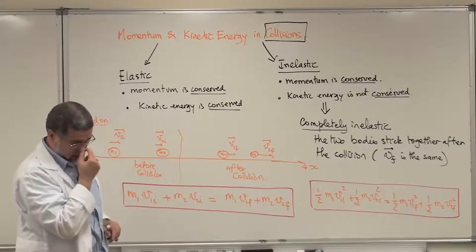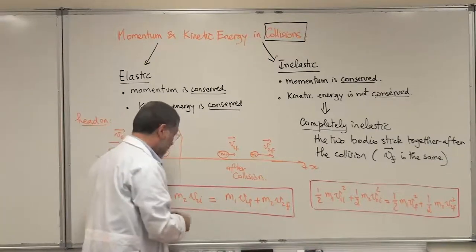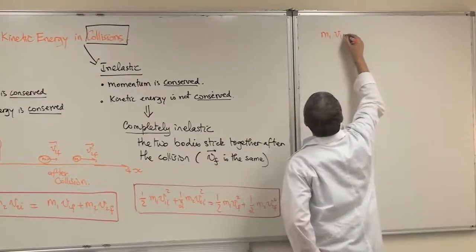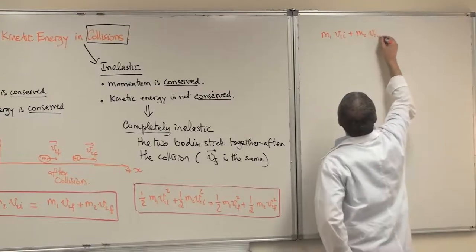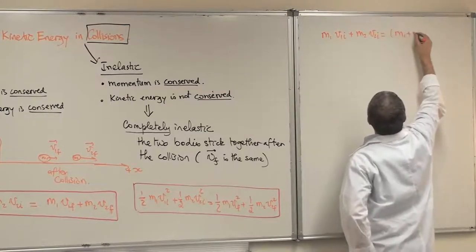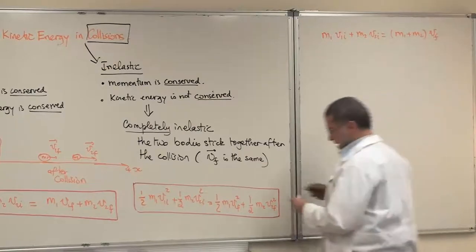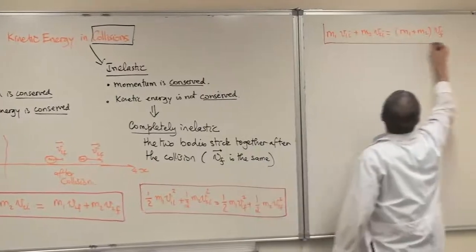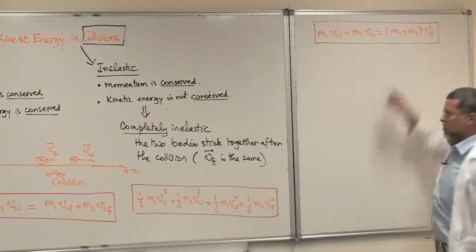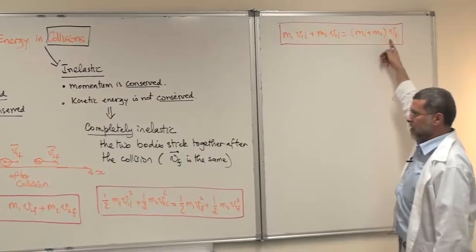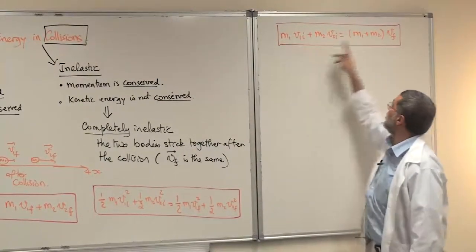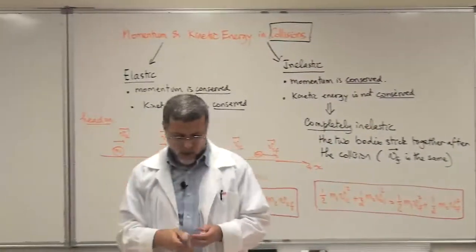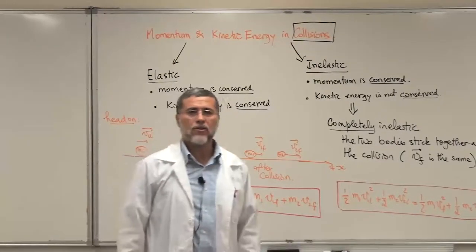If it is completely inelastic, you write: M1·V1_initial + M2·V2_initial = (M1 + M2)·V_final. That is the equation for completely inelastic collision — the two masses stick together and have the same final velocity. These are the three very important equations you need when solving problems related to collisions.